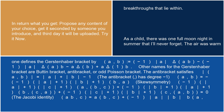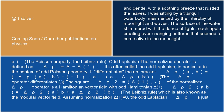The antibracket satisfies: |A,B| equals |A| plus |B| minus 1, so the antibracket has degree minus 1; skew symmetry: (A,B) equals minus (minus 1)^(|A|+1)(|B|+1) · (B,A); and the Jacobi identity: (minus 1)^(|A|+1)(|C|+1) · (A,(B,C)) plus (minus 1)^(|B|+1)(|A|+1) · (B,(C,A)) plus (minus 1)^(|C|+1)(|B|+1) · (C,(A,B)) equals 0. The antibracket also satisfies the Poisson property (Leibniz rule): (A, BC) equals (A,B)·C plus (minus 1)^(|B|(|A|+1)) · B·(A,C).